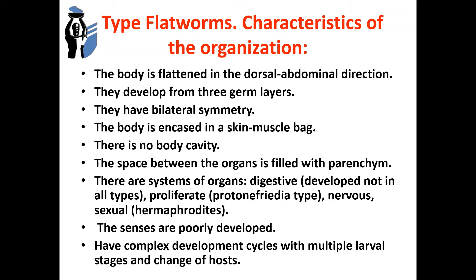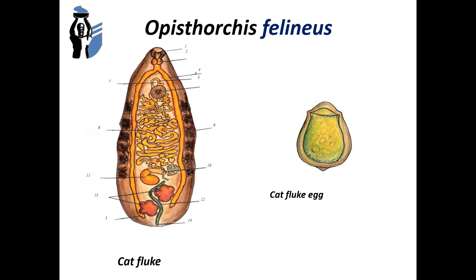There are three classes of type flatworms: Turbellaria, Trematoda, and Cestoda. Representatives of Trematoda and Cestoda have medical value. Let's study class Trematoda and species Opisthorchis felineus — this is the pathogen of opisthorchiasis. The morphological features are: the parasite body is leaf-shaped, has a length from 13 to 15 mm, two suction cups for fixing, and egg size of 26 to 30 microns.